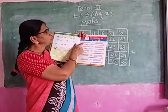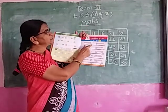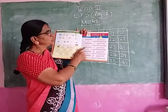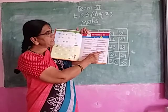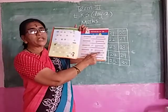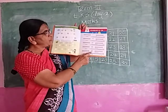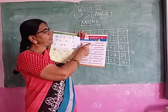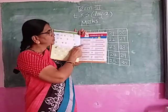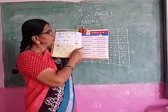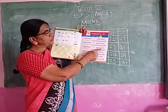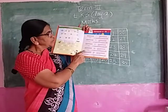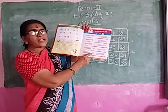Let's say one more time. 20 and 1 — 21. 20 and 2 — 22. 20 and 3 — 23. 20 and 4 — 24. 20 and 5 — 25.